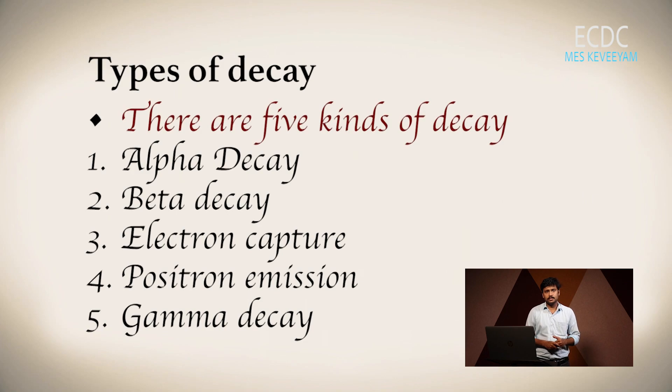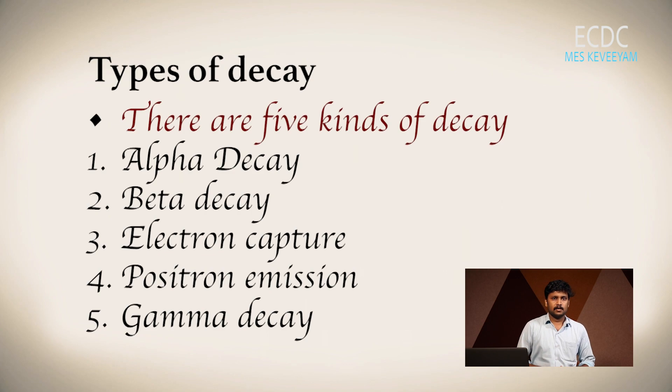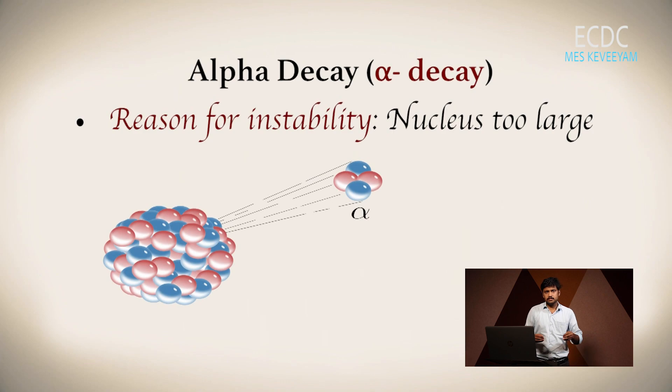Types of radioactivity: There are five types of radioactive decay process: alpha decay, beta decay, electron capture, positron emission, and gamma decay. First, alpha decay: If the nucleus is too large or the size of the nucleus may be the reason for instability, then alpha decay will occur.